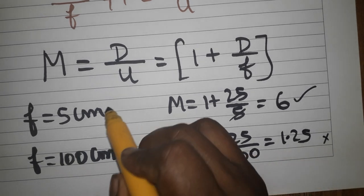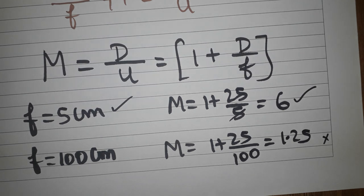Less focal length has more magnification power. So the preferred lens is the one with less focal length. Thank you for watching my video. If you like my channel, please subscribe. Thank you.